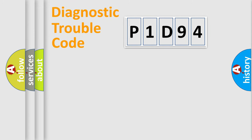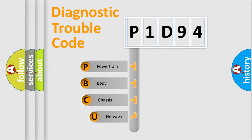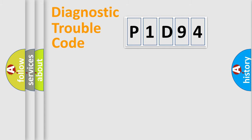Let's do this. First, let's look at the history of diagnostic fault code composition according to the OBD2 protocol, which is unified for all automakers since 2000. We divide the electric system of an automobile into four basic units: Powertrain, Body, Chassis, and Network.